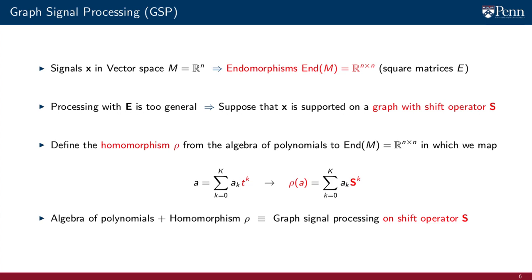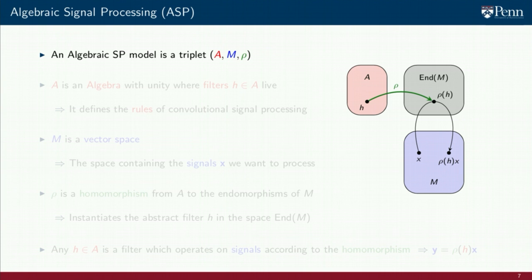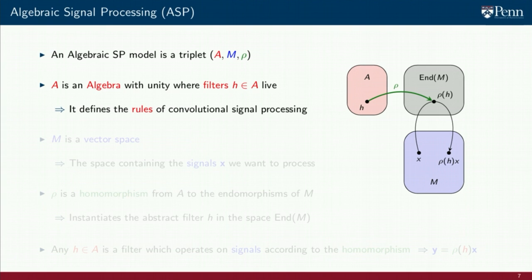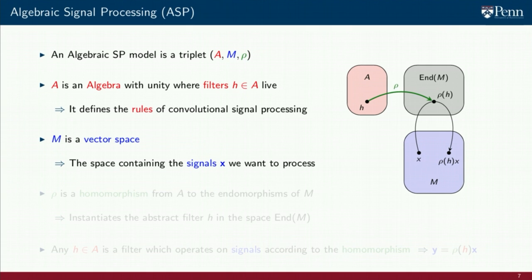The value of the abstract algebraic formulation is that several other versions of signal processing can be recovered from different choices of algebras and homomorphisms. We can now reintroduce our block diagram defining algebraic signal processing models. An ASP model is a triplet (A, M, rho). In the ASP model, A is an algebra with unity where filters H are defined. The algebra defines the rules of convolutional signal processing; it is defined in the abstract, at the symbolic level of squiggles on a piece of paper. The second component of the ASP model is a vector space M — this is the vector space containing the signals that we want to process, typically a vector space where we can write objects made up of numbers that we can add and multiply according to some rules.